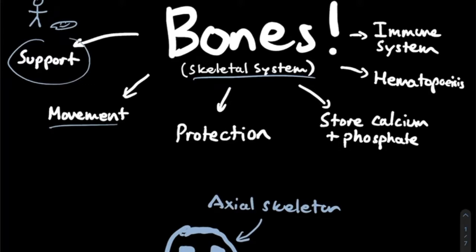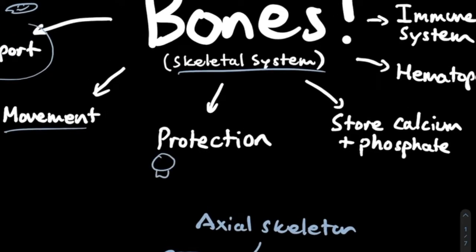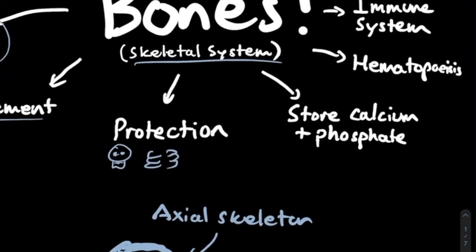The third function is protection. We have different structures like our skull at the top of our head, and then your ribs and vertebrae and all of that. Those help protect different organs within your body — the skull protects your brain, the vertebrae protect your spine, and the rib cage protects important structures like your heart and lungs.